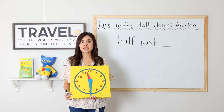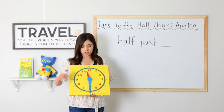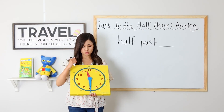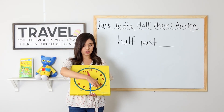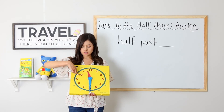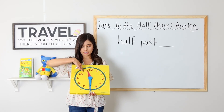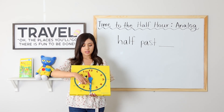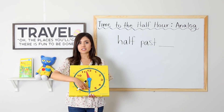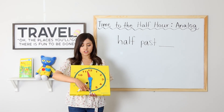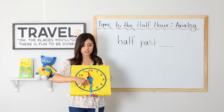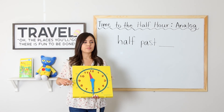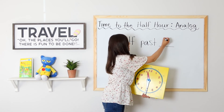Ready for the last example? We have our hour hand pointing between the eleven and the twelve. It comes all the way around to the eleven and we have not reached the twelve yet, so it is still eleven. The minute hand is on the six, so it is thirty. Eleven thirty, or half past eleven.